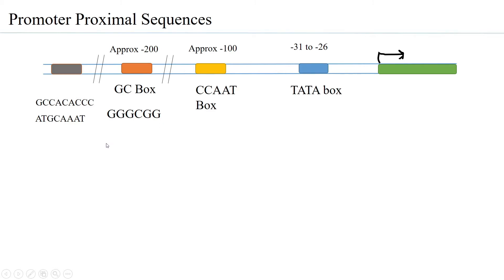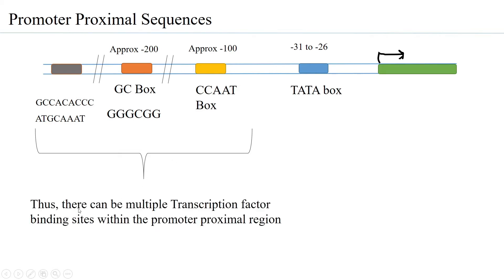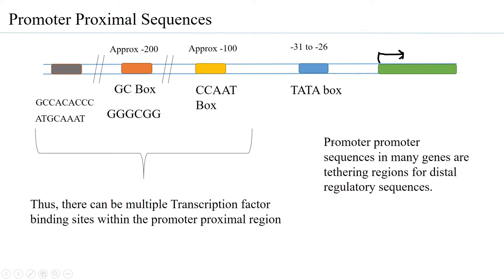Sequences falling within minus 70 to about minus 200 base pairs and beyond — up to minus 500 — are generally considered promoter proximal sequences. Majorly, most genes have the CAAT box and the GC box. There can be multiple transcription factor binding sites within the promoter proximal region; it's not just one or two, but more cis elements can be present.